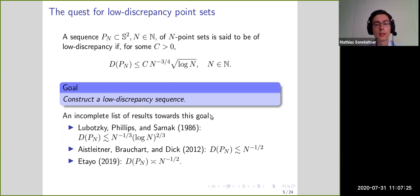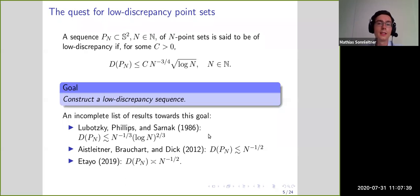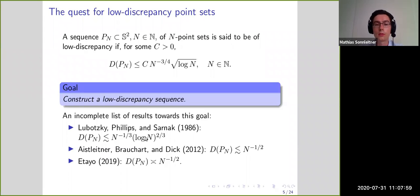The famous construction by Lubotzky, Phillips and Sarnak has discrepancy bounded by n to the minus 1/3 with a logarithmic factor. The difference in exponents compared to the optimal rate is quite large, so it is still far from asymptotically optimal.